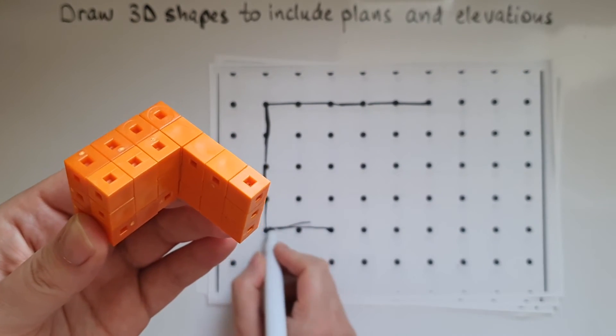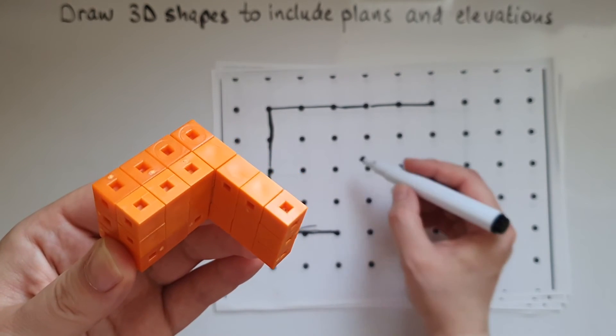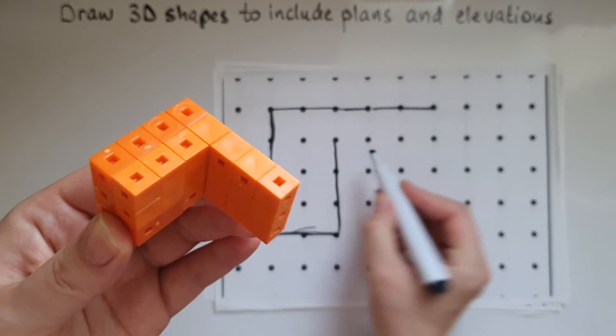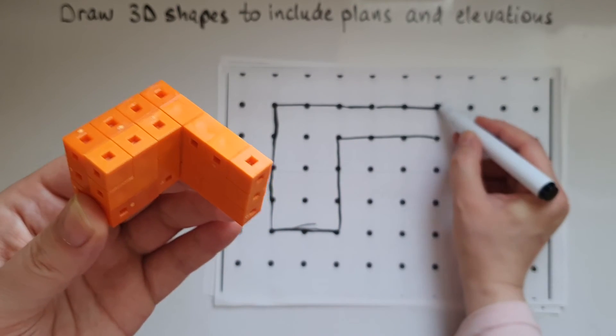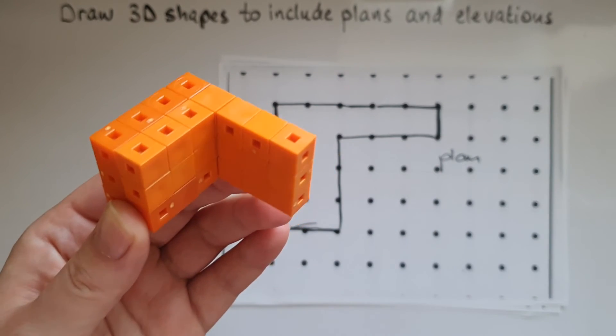You'd need to use a ruler and be more precise than I am being. So we go three up, then across. So this is the plan of this shape.